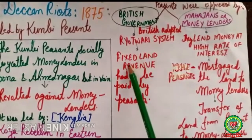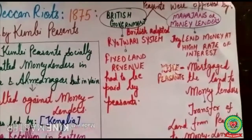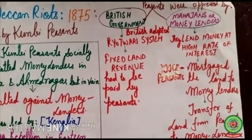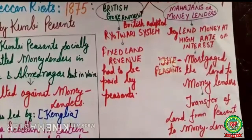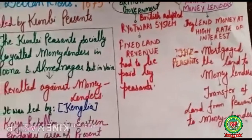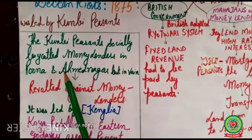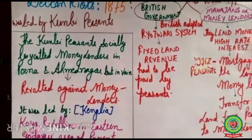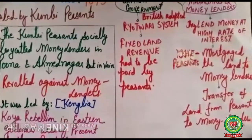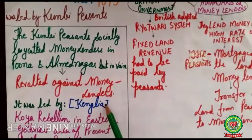Under the Ryotwari system, fixed land revenue had to be paid and moneylenders also exploited the peasants by lending money at high rates of interest. The peasants had to mortgage their land to moneylenders, resulting in the transfer of land from peasants to moneylenders. The Kunbi peasants socially boycotted moneylenders in Pune and Ahmednagar, but this was not successful. So they revolted against the moneylenders, and this revolt was led by a local leader called Kamliya.